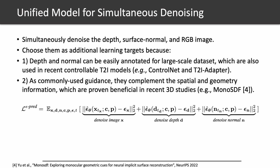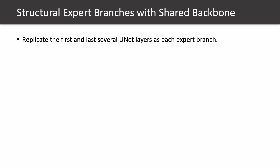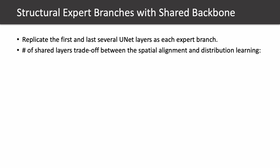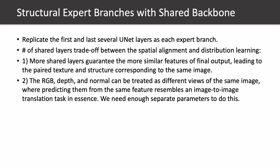In this way, we can use a simplified objective to jointly denoise the RGB image, depth, and normal map. The second problem is that the image RGB and structural representations are spatially aligned but substantially different in latent space, making joint modeling challenging. To deal with this, we propose structural expert branches with a shared backbone by replicating the first and last several layers for each expert branch. The number of shared layers trades off between spatial alignment and distribution learning. More shared layers guarantee more similar features in the final output, leading to paired texture and structure corresponding to the same image. Meanwhile, RGB, depth, and normal can be treated as different views of the same image, where predicting them from the same feature resembles an image-to-image translation task, requiring enough separate parameters.